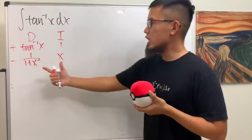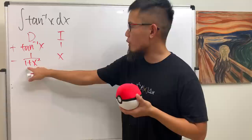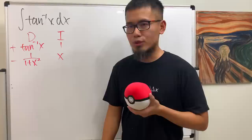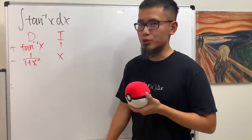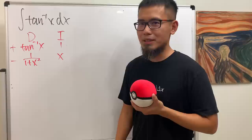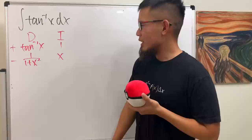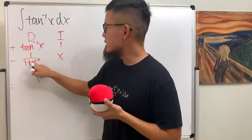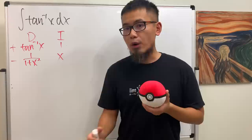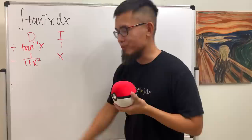Differentiating inverse tangent x, we get 1 over 1 plus x squared. Integrating 1, we get x. Now, should we keep going? Can we differentiate 1 over 1 plus x squared? Yes. Will we ever get to zero? No. Can we integrate x? Sure — one half x squared. But you should have a sense of danger, because this will never give you zero. So we stop right here, because we can actually integrate the product x over 1 plus x squared — that's the second stopping condition: when you can integrate the product of a row.